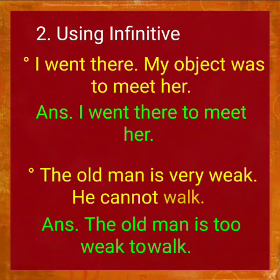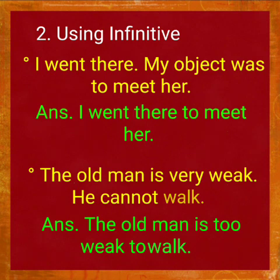Next example: 'The old man is very weak. He cannot work.' The answer will be: 'The old man is too weak to work.' Here, the main verb is 'is.'